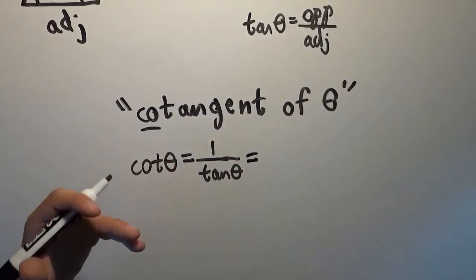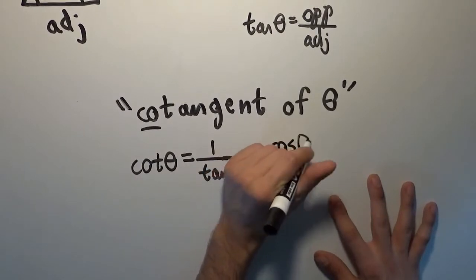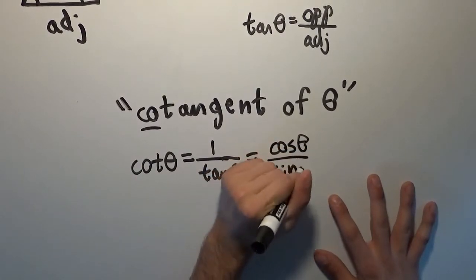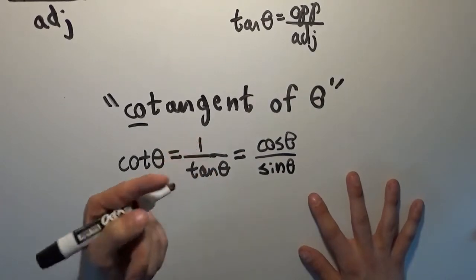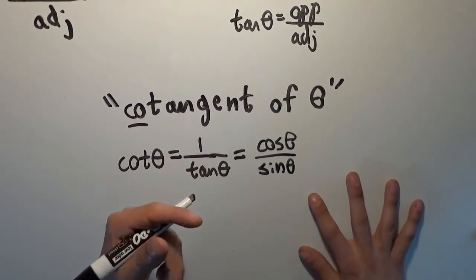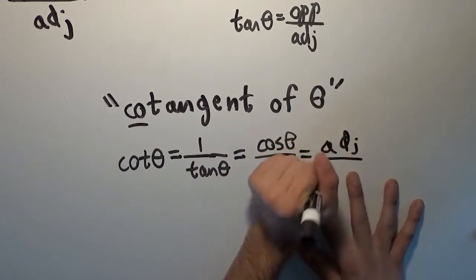Because tangent is sine over cosine, cotangent must therefore be cosine over sine. And in terms of the sides of the triangle, tangent is opposite over adjacent. So cotangent, being 1 over tangent, has to be adjacent over opposite.